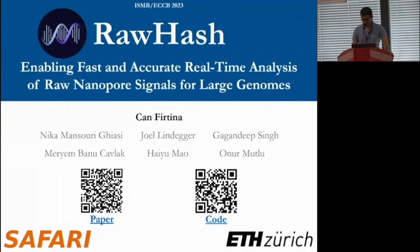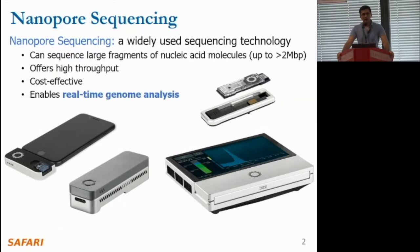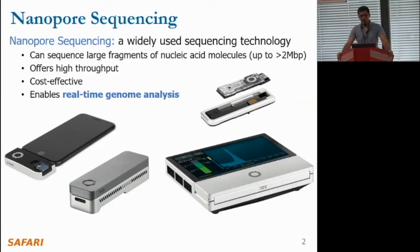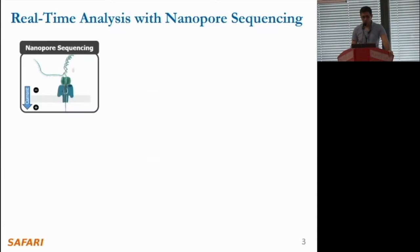Hello everyone. I'm John, a PhD student in the software research group led by Professor Onur Mutlu at ETH Zurich. Today I'll present our work RawHash, enabling fast and accurate real-time analysis of raw nanopore signals for large genomes. Nanopore sequencing is a widely used sequencing technology that can sequence large fragments of nucleic acid molecules up to more than two million bases, offering high throughput, relatively low cost, and real-time genome analysis.